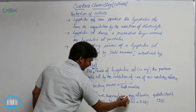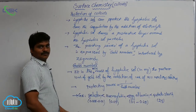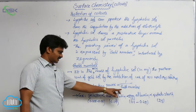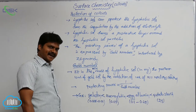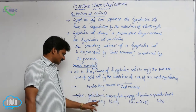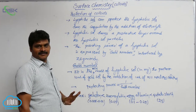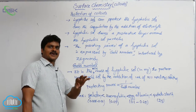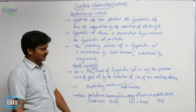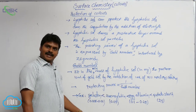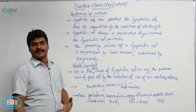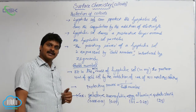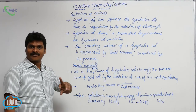For potato starch, the gold number is 25. So gold numbers are increasing in this order. Whatever has the highest gold number has the least protecting power, and whatever has the smallest gold number has the highest protecting power. Among the four lyophilic colloids, gelatin has the highest protecting power, whereas potato starch has the least because its gold number is very high. Gold number represents the protecting power of the lyophilic salt.